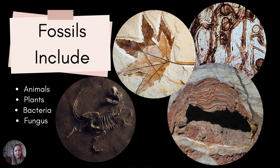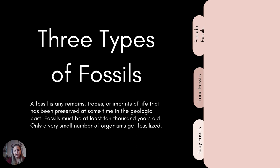Fungi can also be preserved, although it's a lot harder to see — there's a microscopic view of one in the upper right-hand corner. Plants are represented by the leaf, and the dinosaur fossil is the animal example.